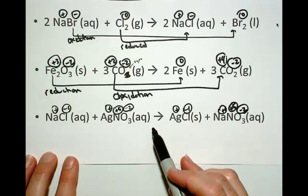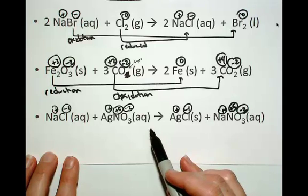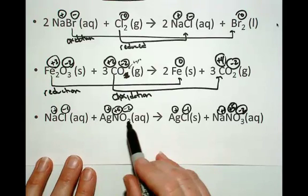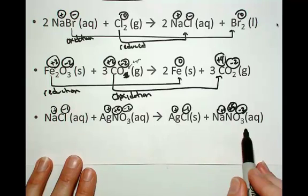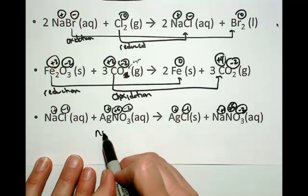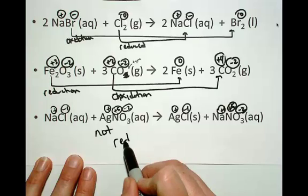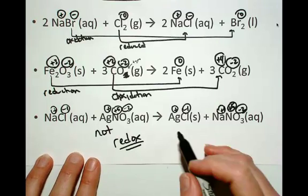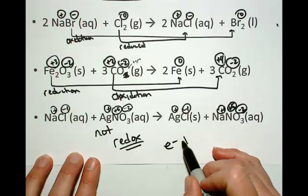This is an example of a chemical reaction that is not an oxidation-reduction reaction. There's no change in oxidation numbers, so it's not a redox reaction. Not all chemical changes are redox reactions, and this is an example of one that is not. Electron transfer is not occurring.